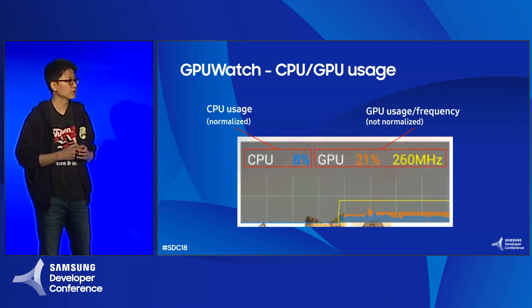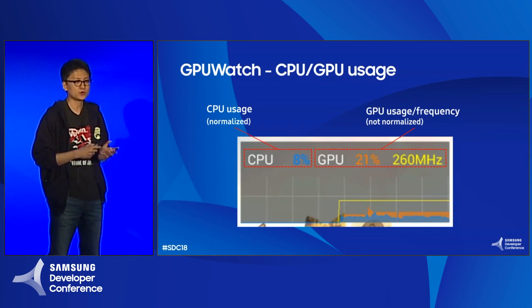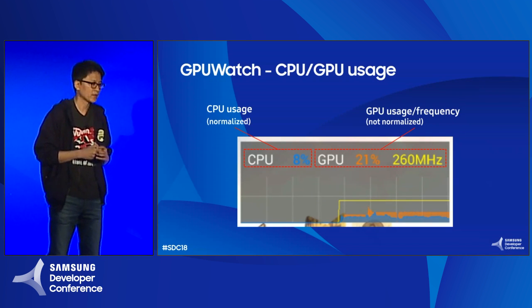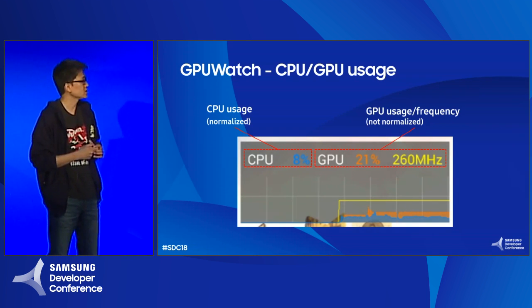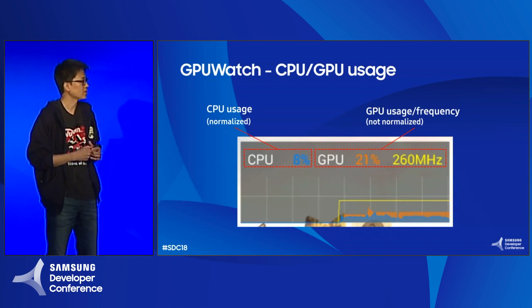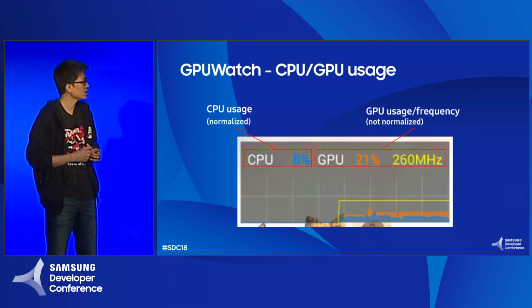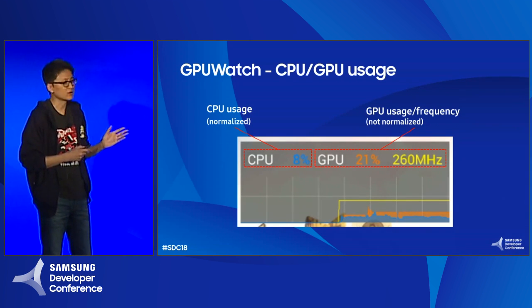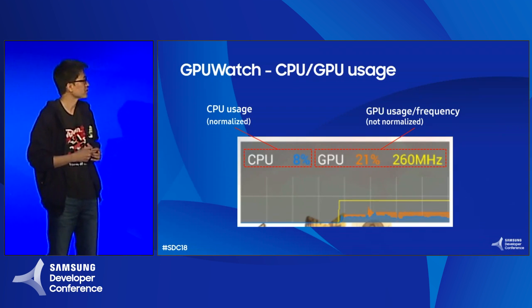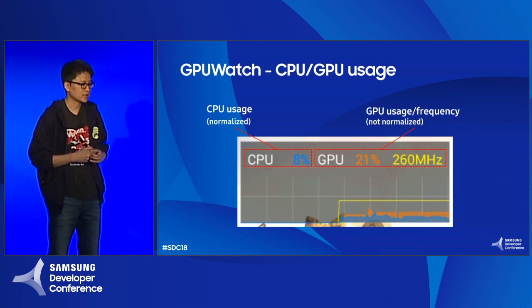In the top-right corner, GPU Archie shows CPU usage and GPU usage. CPU usage is a normalized value, not dependent on the current CPU frequency, but GPU usage is not — so the current GPU frequency is shown alongside it. These values are all displayed with graphs together.